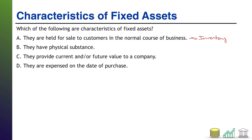Inventory is what you hold for sale to customers in the normal course of business. Your fixed assets are what you use to run your business, and you don't intend to sell those to your customers. B: they have physical substance — yes, this is a characteristic of a fixed asset. Fixed assets are typically very large, very expensive, very long-lived, tangible, touchable objects, so they do have physical substance. C: they provide current and/or future value to a company — yes, that is the very definition of an asset. All assets have to hit that criteria, including fixed assets. And D: they are expensed on the date of purchase — that is absolutely not true, because they are expensed over time through the process of depreciation.